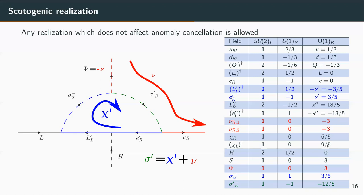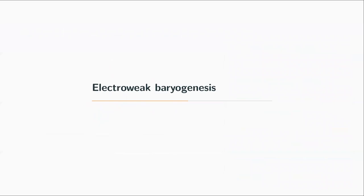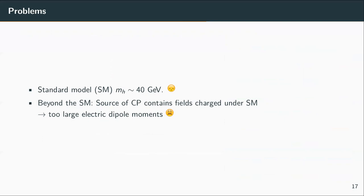In this model we can explain at least the generation of small neutrino masses and the presence of dark matter through a Dirac fermion dark matter candidate. In addition, in this kind of scenario we have the ingredients also to explain baryogenesis. The usual approach to explain baryogenesis within the Standard Model is not possible because the Higgs mass is too heavy to have a sufficiently strong phase transition. If we try to implement baryogenesis beyond the Standard Model, the typical problem is that the source of CP violation is usually associated with couplings to Standard Model fields, like in supersymmetry or in the two-Higgs doublet model.